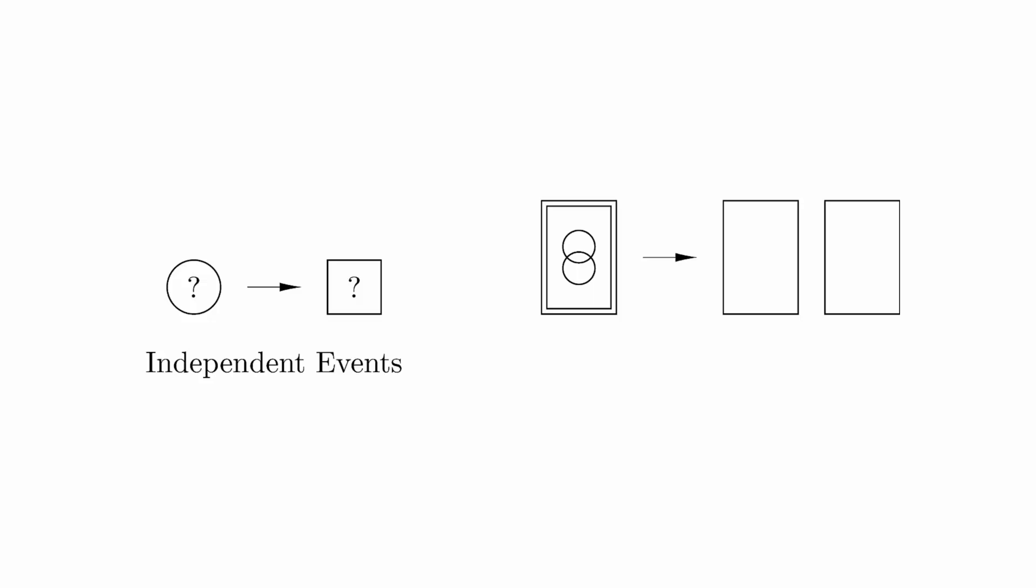However, if you deal two cards from a standard deck, the probabilities for the second card are influenced by the first card. If the first card is the ace of spades, then there's no way the second card could also be the ace of spades.